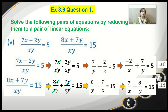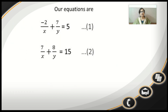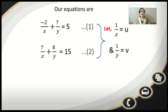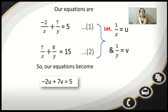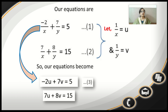Look at this — the equations which were not linear equations in two variables have been converted into a simpler form. But equations 1 and 2 are still not linear equations in two variables, so we need to convert them once again. To do so, we substitute: let 1 upon x equal u, and 1 upon y equal v. Equation 1 becomes minus 2u plus 7v equals 5 — numbered equation 3. And equation 2 becomes 7u plus 8v equals 15 — numbered equation 4.